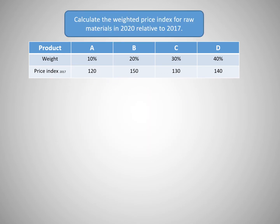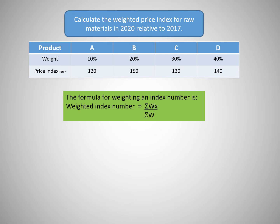We can use this information to find out how much the price of producing this good has risen by between 2017 and 2020. To do this, we can use the following formula, where the Greek symbol sigma represents sum of, or to add up, W stands for weightings and X stands for index numbers.